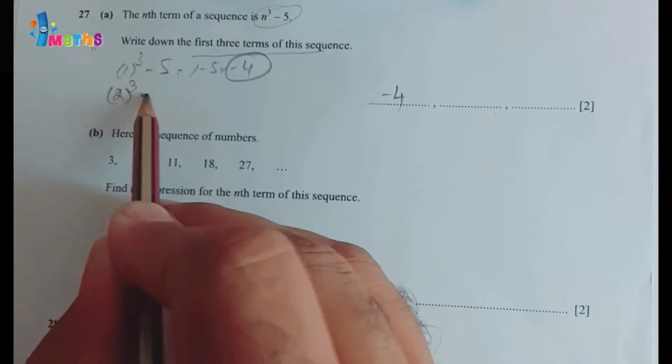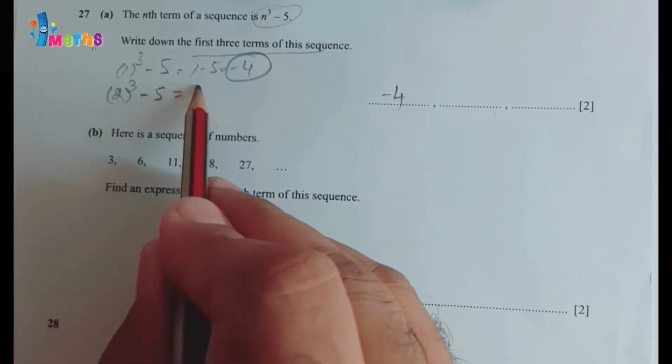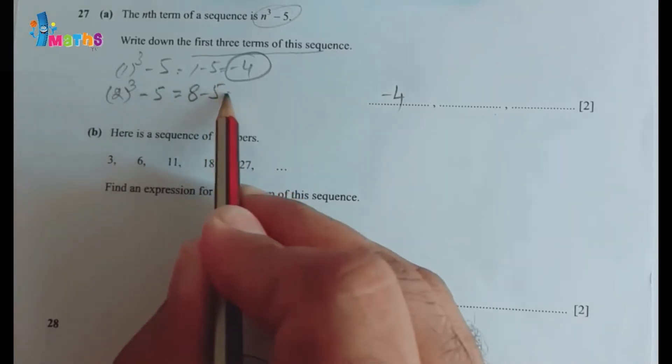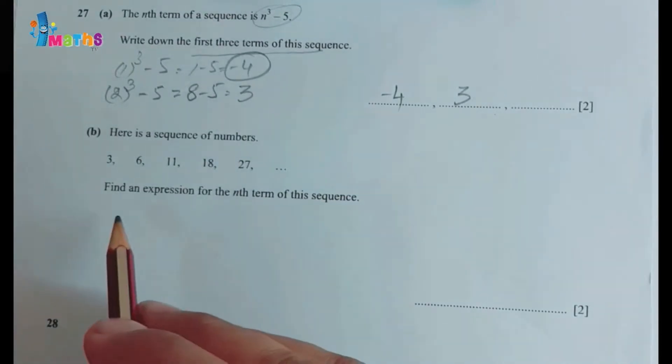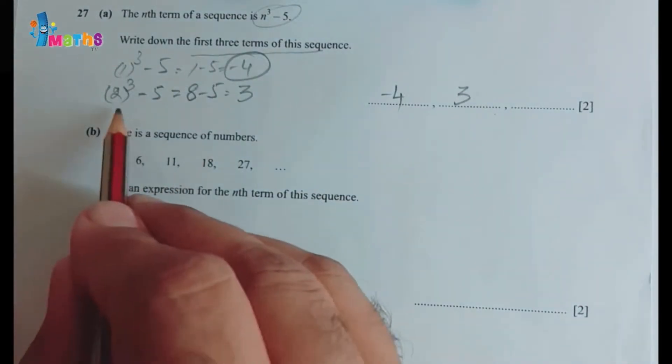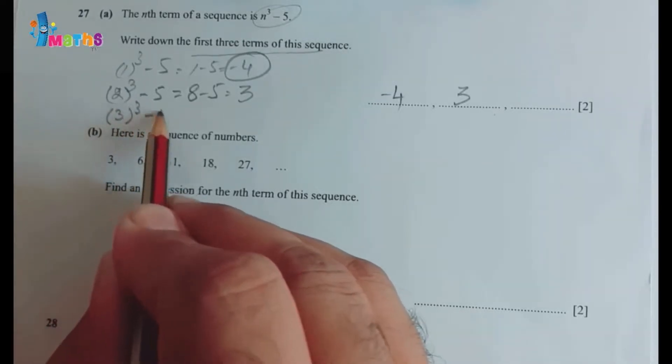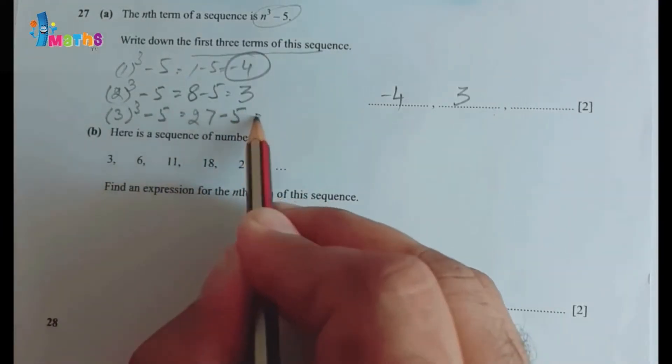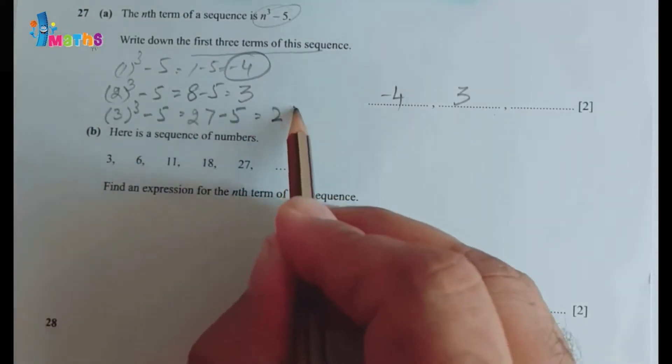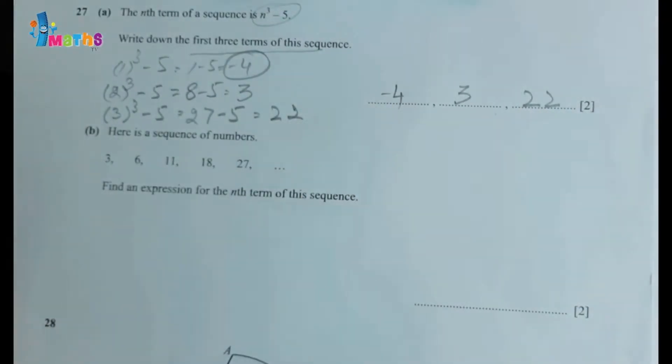Then we replace n equals 2, so 2³ minus 5 will equal 8 minus 5, which equals 3. So the second term will be 3. Then we will replace n equals 3: 3³ minus 5, this will be 27 minus 5, which equals 22. So our answer will be minus 4, 3, and 22.